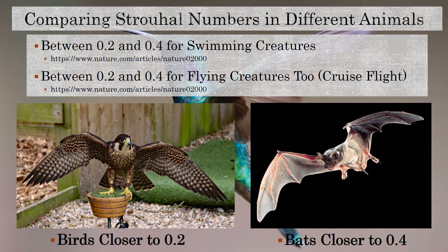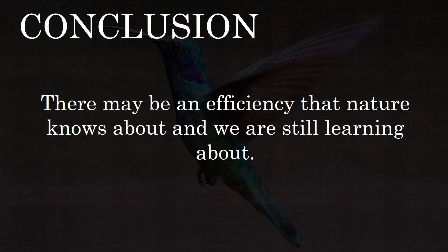Several studies have looked at Strouhal numbers of different animals, both swimmers and flyers, and found something interesting: for swimming animals like sharks, dolphins, and whales, the Strouhal number falls somewhere between 0.2 and 0.4. Remarkably, when they looked at flying creatures — birds and bats — the number fell in the same range, with birds closer to 0.2 and bats closer to 0.4. This suggests there may be some sort of efficiency that nature has converged upon, and it will come up again as we look at papers on flapping wing flight alongside parameters like reduced frequency.